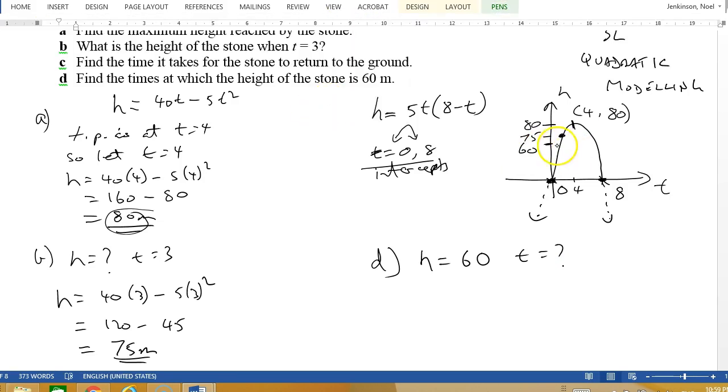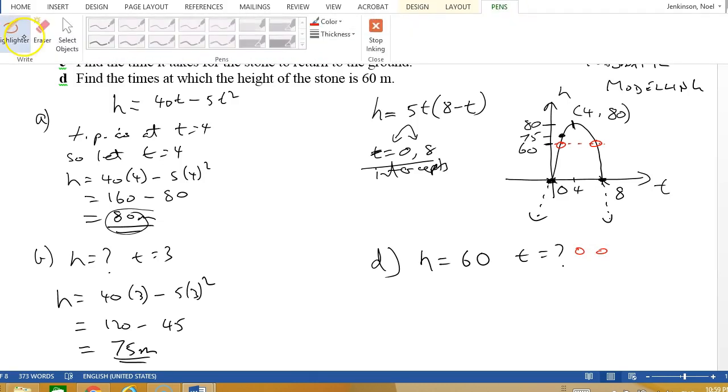You can see here if I dotted across at 60, I've got 2 times. So we're going to find these 2 times when the height is 60. I'm just going to solve an equation.